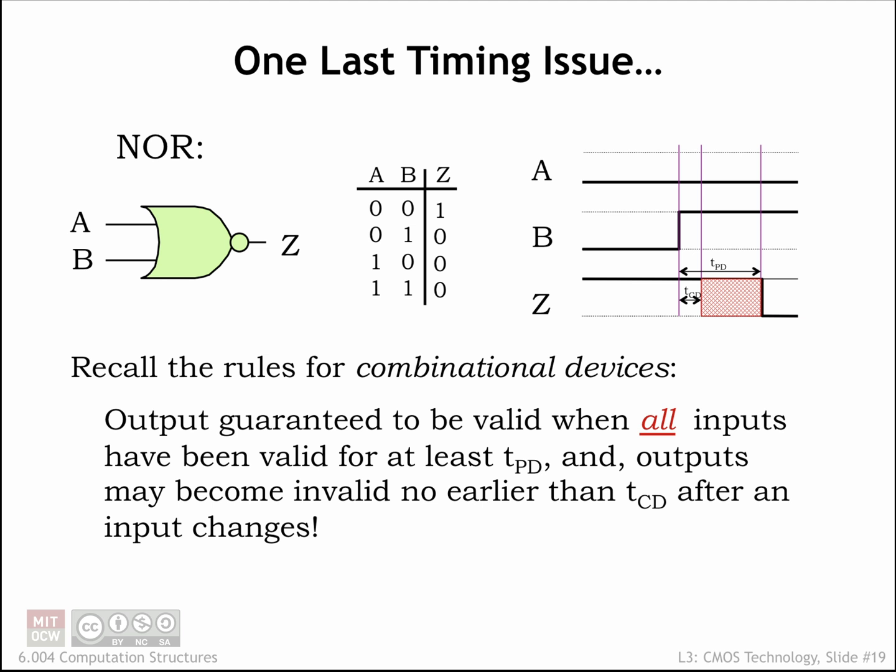Looking at the waveform diagram, we see that initially the A and B inputs are both 0, and the output Z is 1, just as specified by the truth table. Now, B makes a 0 to 1 transition, and the Z output will eventually reflect that change by making a 1 to 0 transition.